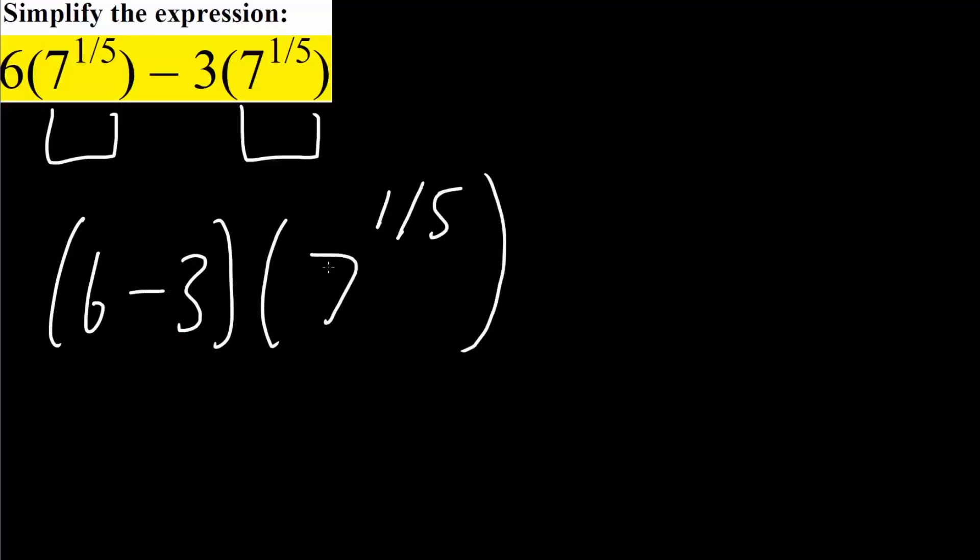And if we want we can check: 6 times 7 raised to the 1/5 is this, minus 3 times 7 raised to the 1/5 is this, so it works. And so 6 minus 3 is 3 times 7 raised to the 1/5.